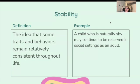Next we're going to look at stability — the idea that some traits and behaviors remain relatively consistent throughout our lives. For example, a child who is naturally shy may continue to be reserved in social settings as an adult.